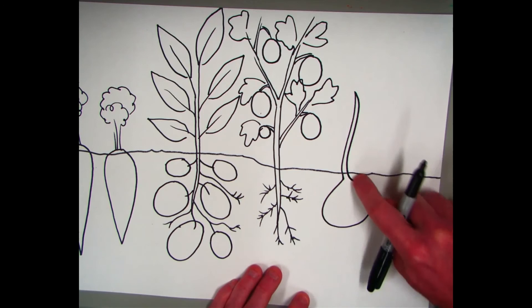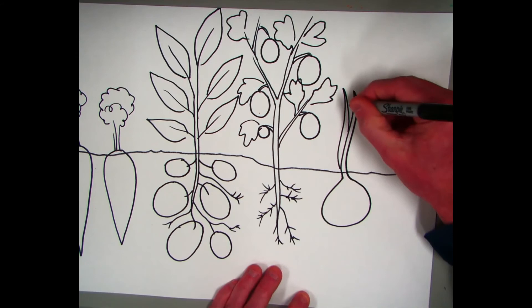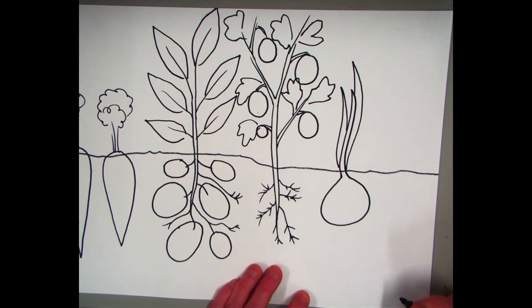That kind of looks funny, doesn't it? It's a round with a line that goes up and connects. And then you just draw a couple more of those. And you have onions. And they're related probably.